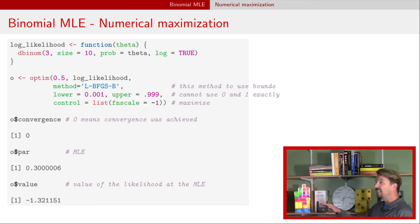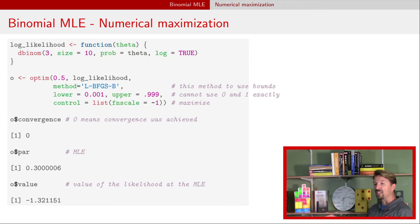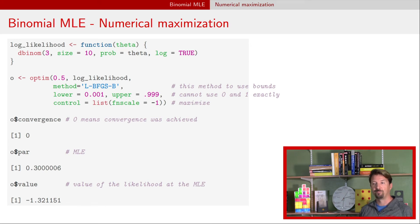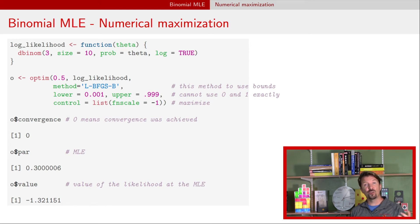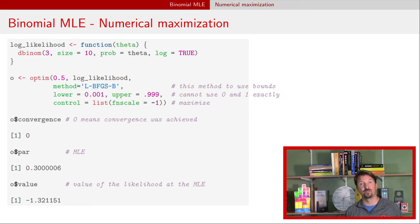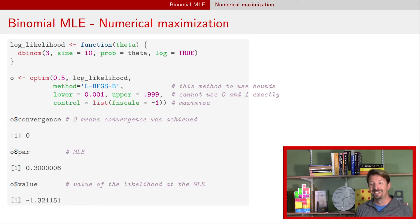The last line is the actual value of the likelihood at that parameter value of 0.3. So that's a third way of finding MLEs — using the computer to do it numerically. In more complex models, this is definitely how you want to do it.